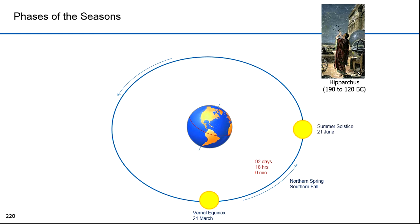Next comes the summer solstice on 21 June. In the north, this is the longest day of the year. In the south, this is the shortest day. It marks the beginning of summer in the north and winter in the south. It's 93 days, 15 hours and 36 minutes long. Notice that summer is longer than spring.